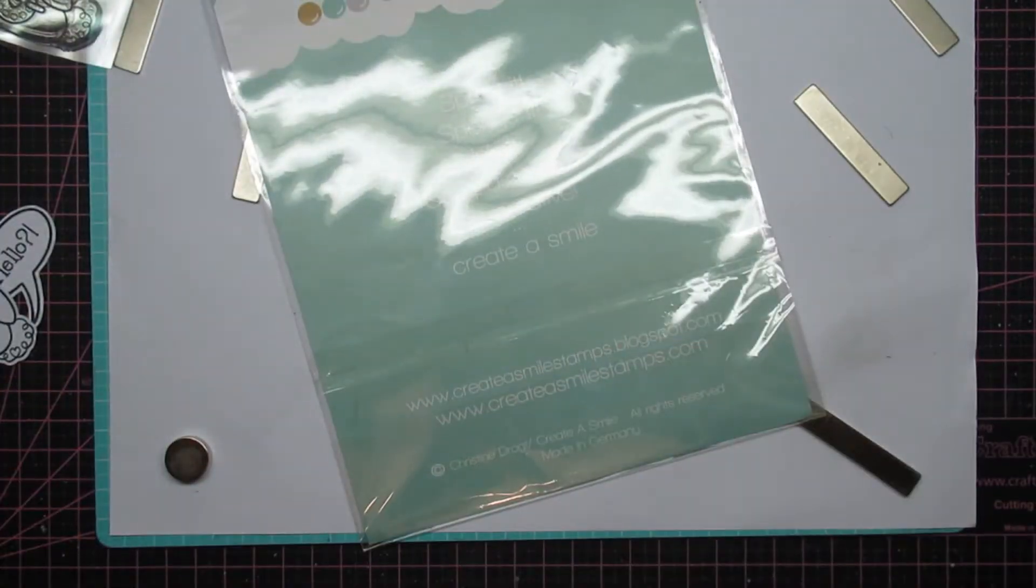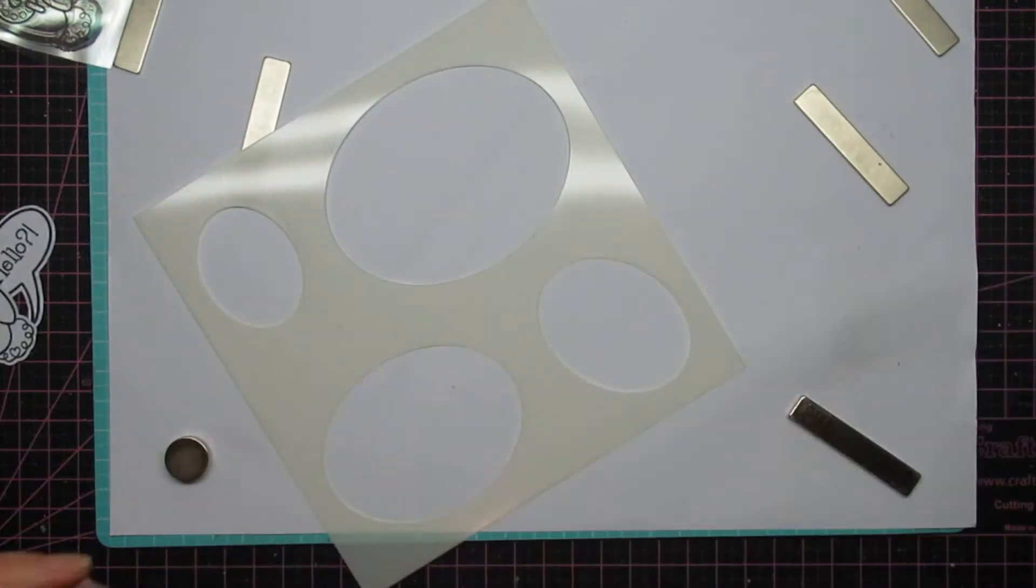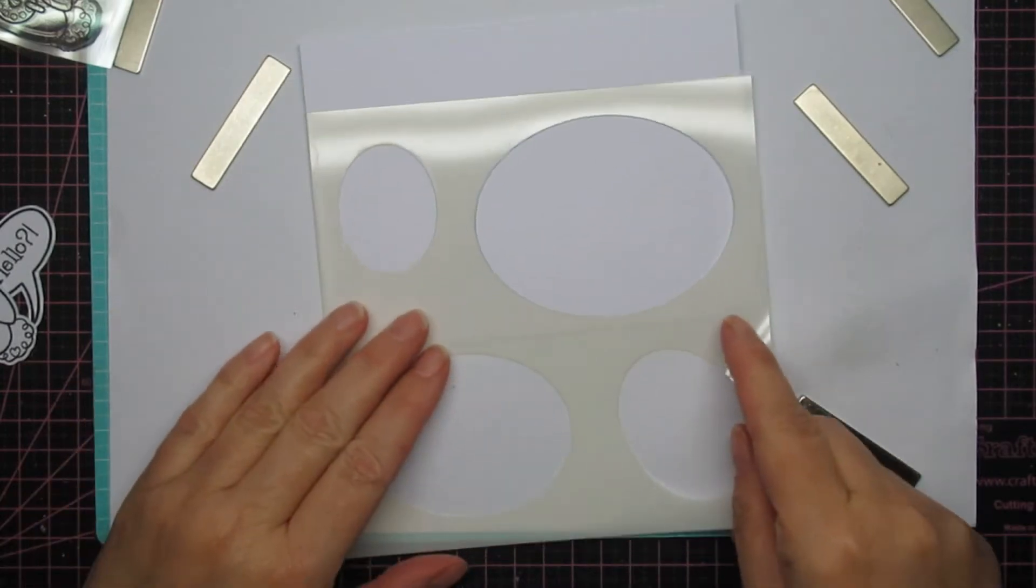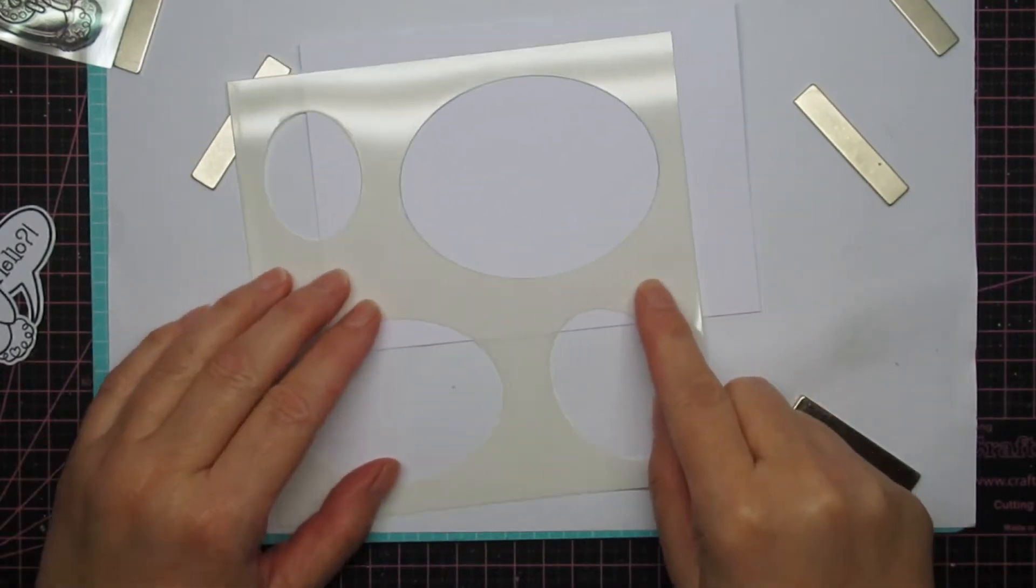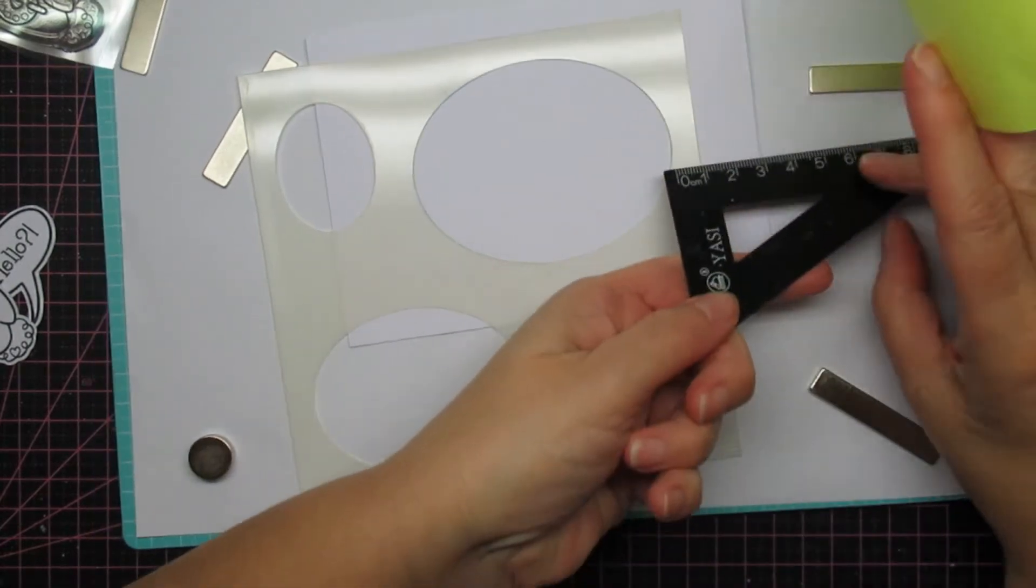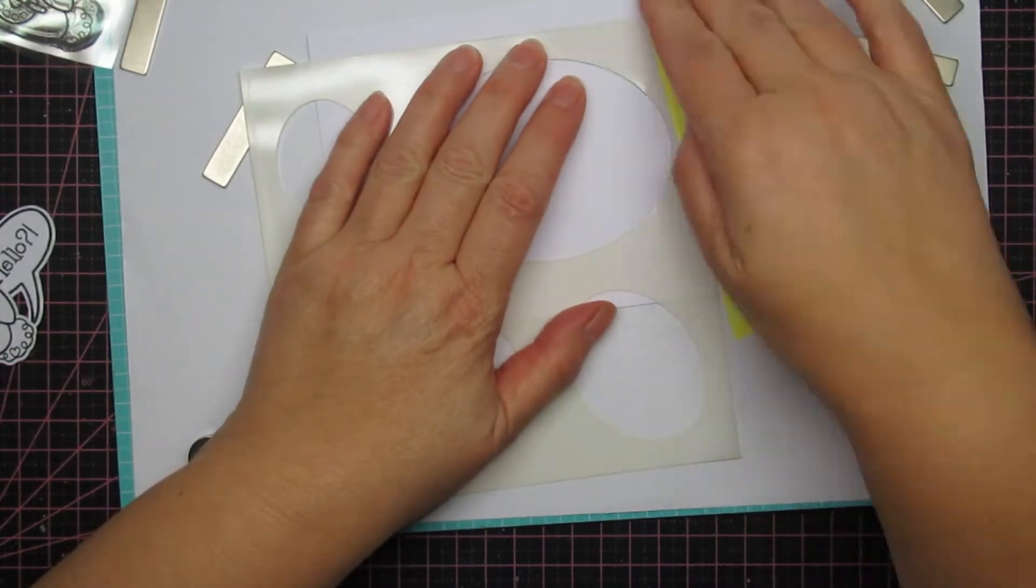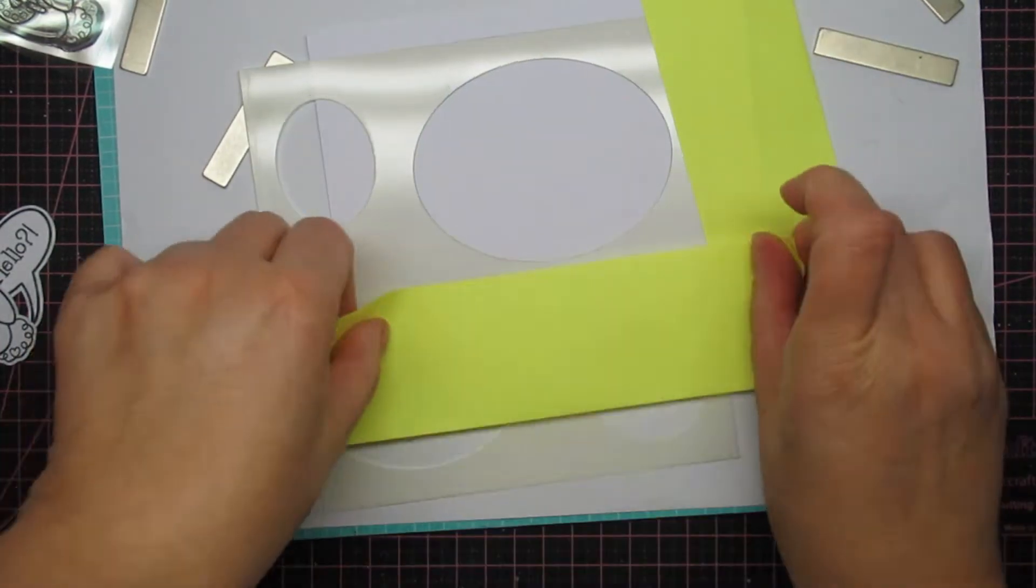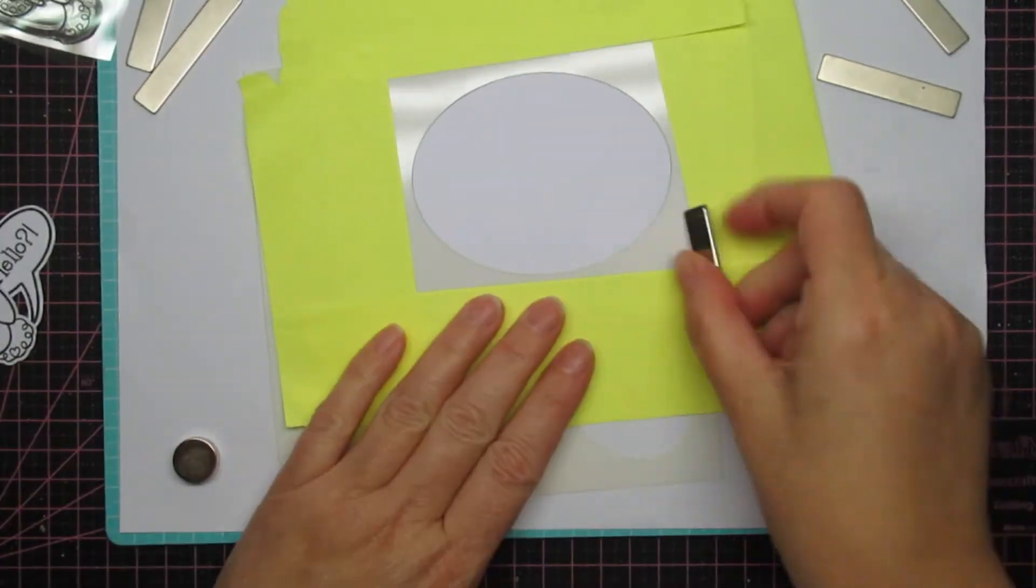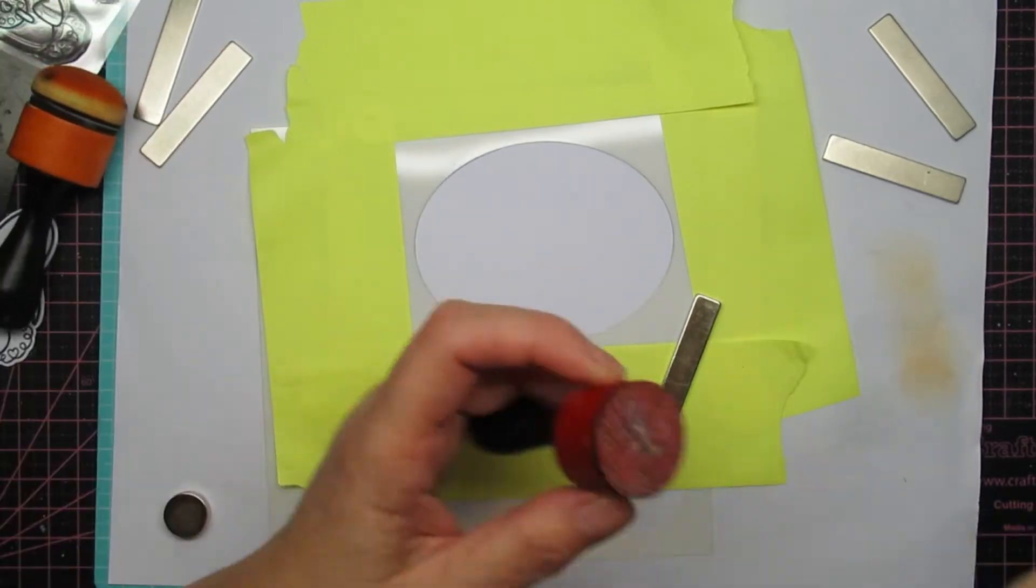Anyway, I already stamped them and cut them out. For the background, I'm using the basic ovals and the distress inks. I wanted to go for orange and pink first. Then I added some yellow too. Mustard seed, picked raspberry, and carved pumpkin. That's usually my favorite color combination when it comes to ink blending.